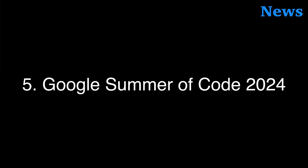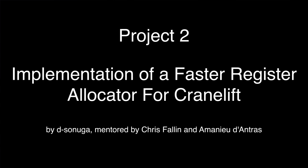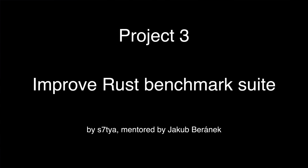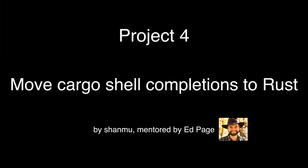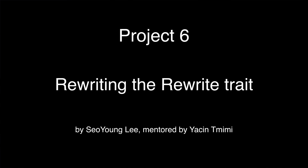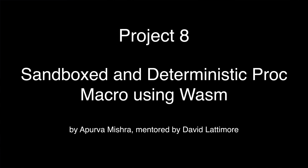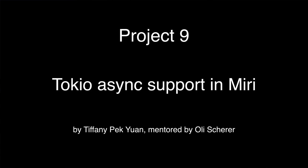Number 5: The Rust Project put out a blog post about the 2024 Google Summer of Code Projects for Rust. Out of 65 total proposals, 9 were accepted. Project 1 is adding lint-level configuration to cargo semver checks. Project 2 is implementation of a faster register allocator for Cranelift. Project 3 is improve Rust benchmark suite. Project 4 is move cargo shell completions to Rust. Project 5 is rewriting esoteric error-prone makefile tests using robust Rust features. Project 6 is rewriting the rewrite trait. Project 7 is Rust to .NET compiler — add support for compiling and running cargo tests. Project 8 is sandboxed and deterministic proc macro using WASM. And Project 9 is Tokio async support in MIRI.